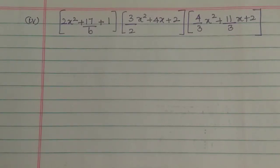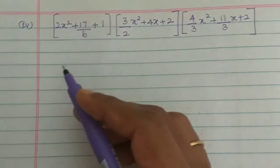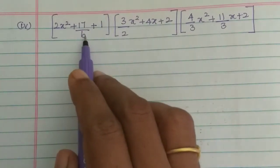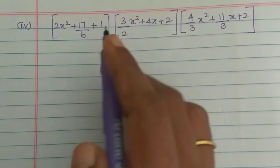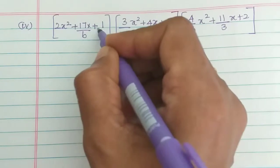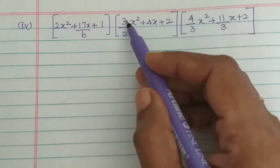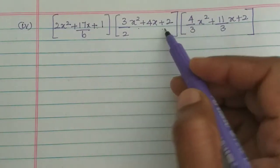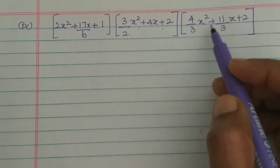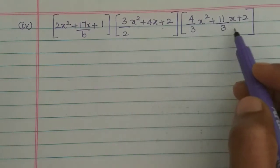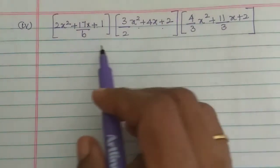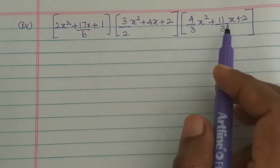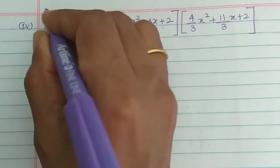Now in the second part, we have the 4th subdivision. The expression is: square root of 2x² plus 17/6 times x plus 1, into 3/2 times x² plus 4x plus 2, into 4/3 times x² plus 11/3 times x plus 2. So we have 3 quadratic expressions under the square root.